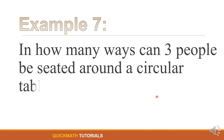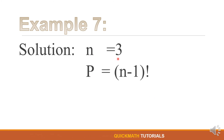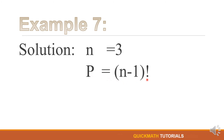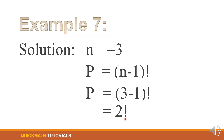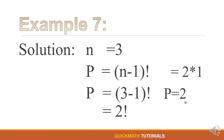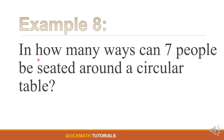For example, in how many ways can 3 people be seated around a circular table? For our solution, n is equal to 3. Using the formula, P equals (n minus 1) factorial. By substitution, 3 minus 1 equals 2 factorial, and 2 factorial is 2 times 1, which is equal to 2.